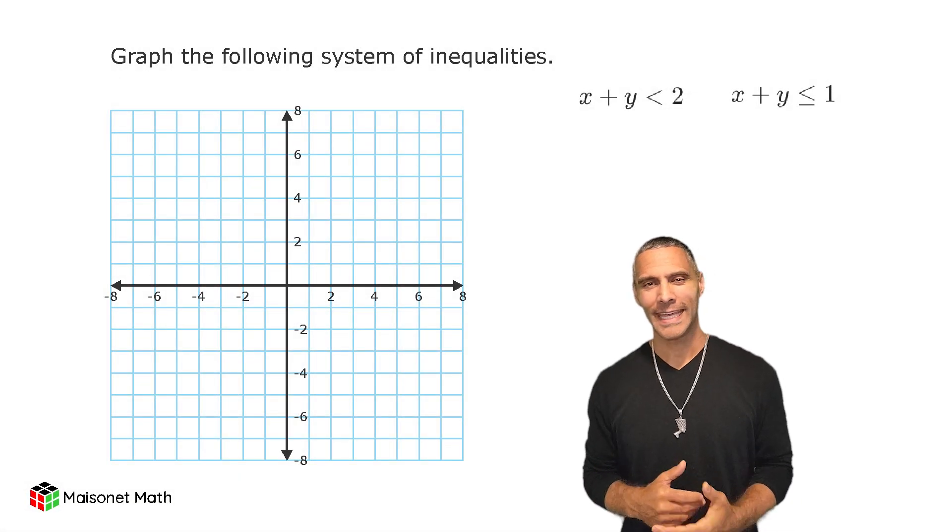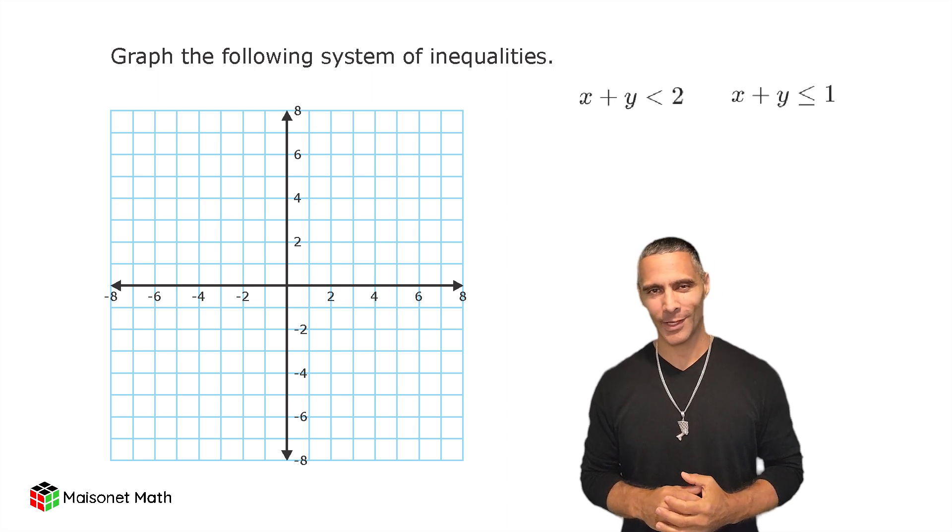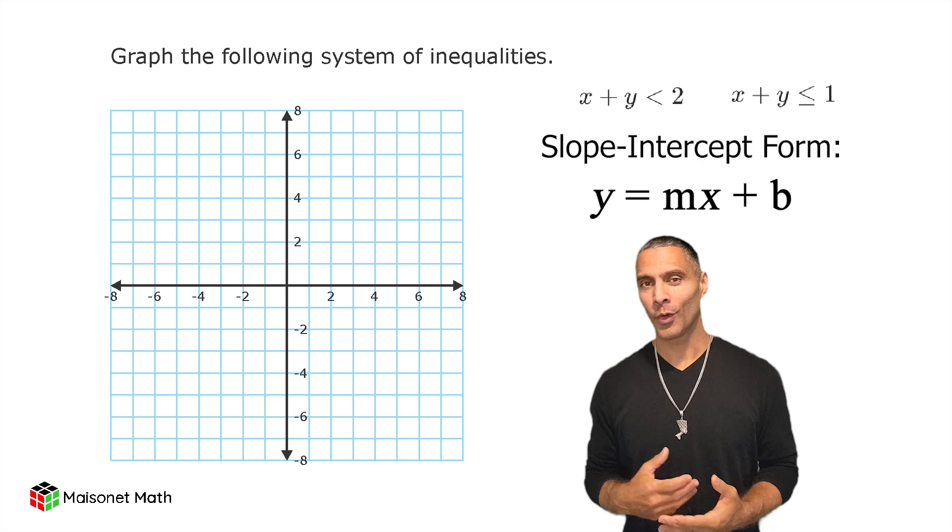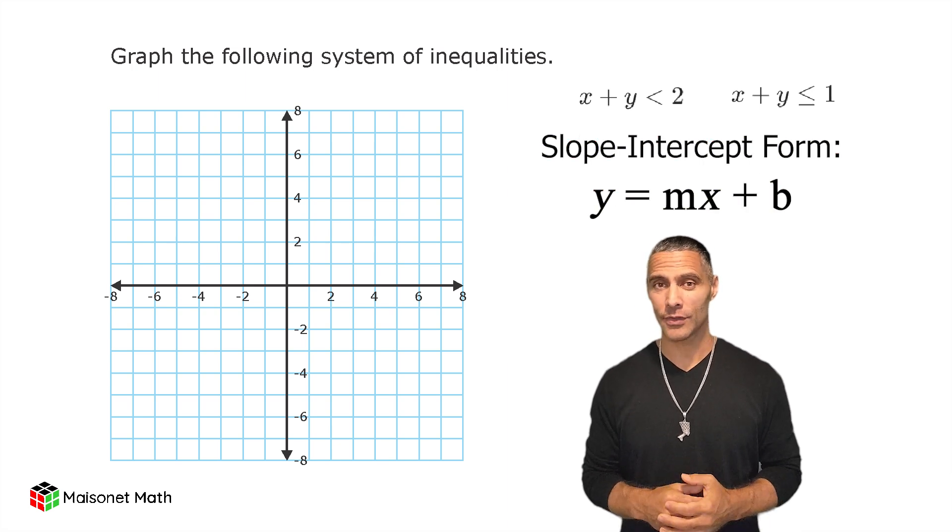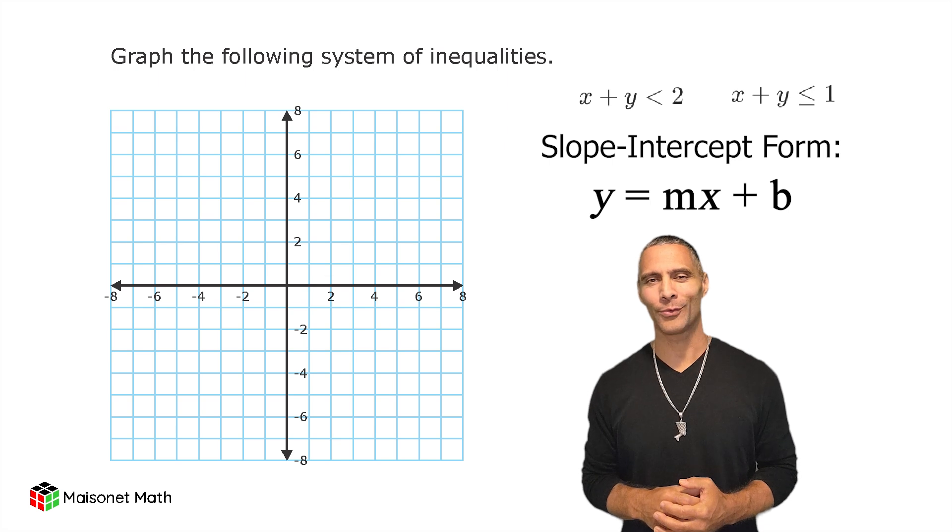Hello everyone. This is Mr. Masonette. In this video, we are going to solve a system of inequalities by graphing. To do this, we'll convert each inequality into slope intercept form, y equals mx plus b, and then graph each line while shading the appropriate regions.